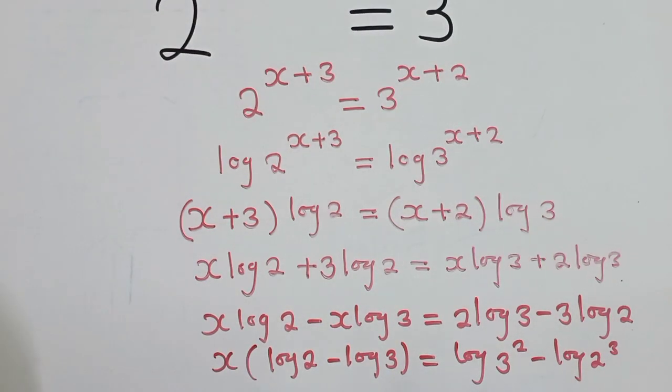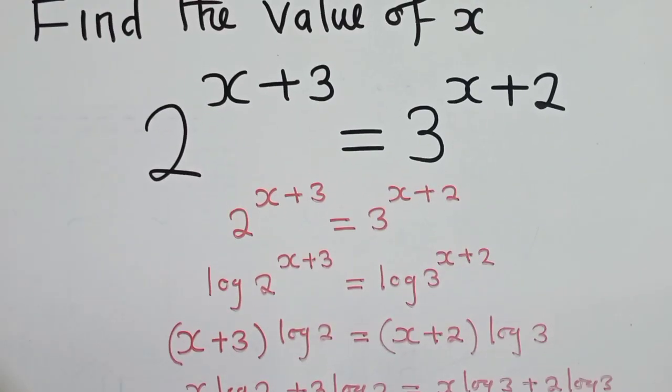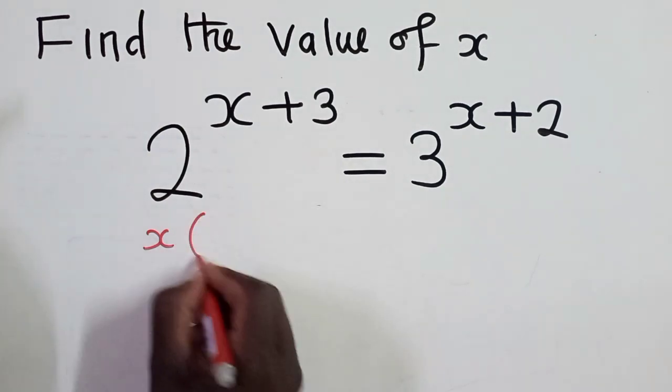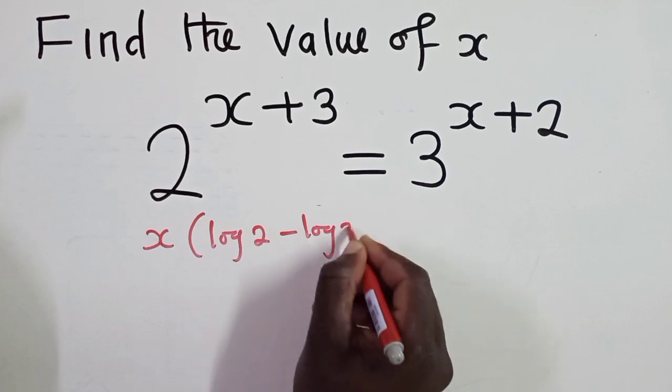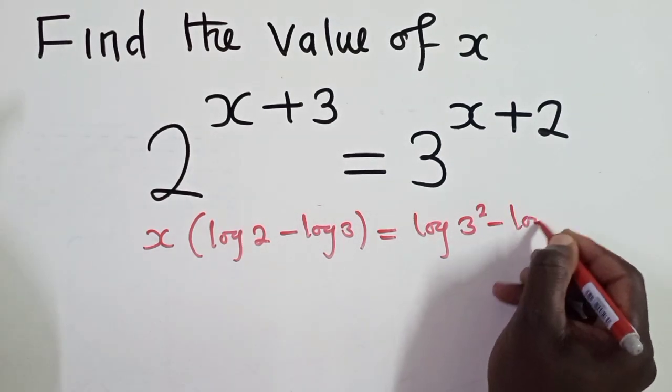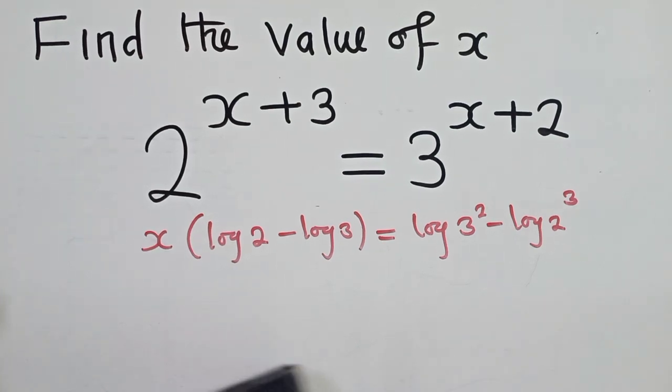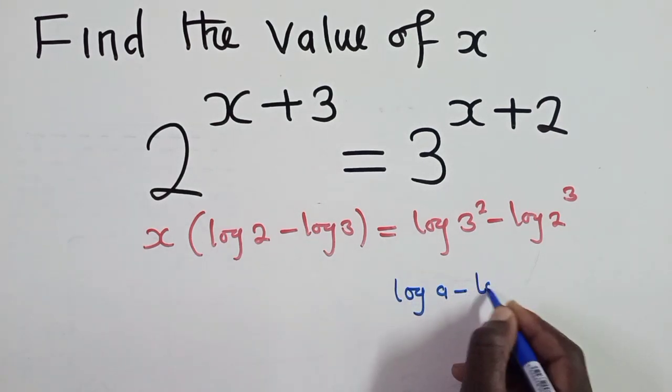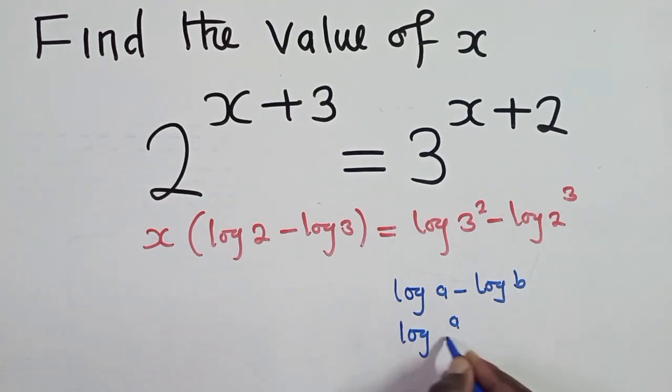All right, so now from this stage, let me clean up so that I copy what we have. We are at x open bracket log 2 minus log 3 is equal to log 3 power 2 minus log 2 power 3. So here, we need to apply some other properties. We are going to use the property which says when you have log a minus log b, this is the same as log a over b. This minus will mean division.